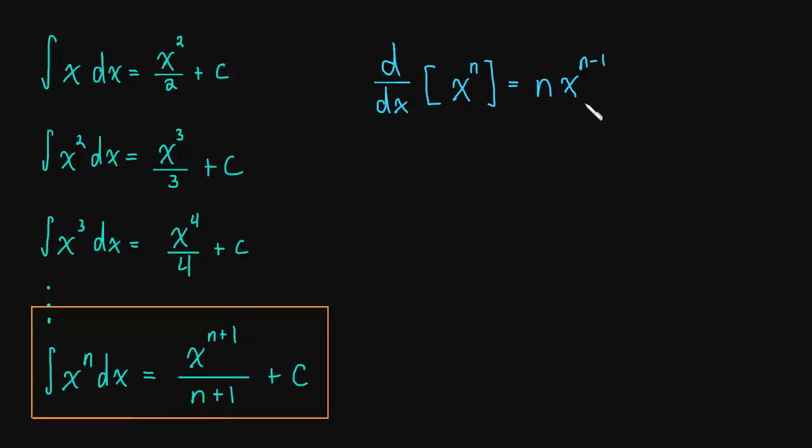To undo that, it's like putting on your socks and then putting on your shoes. To undo that operation, you have to first take off your shoes and then your socks. Here we multiply by n and then subtract 1 from the exponent.